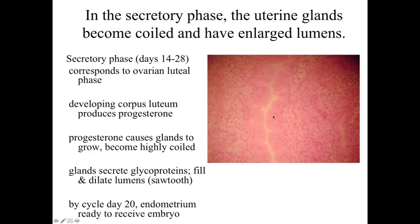After ovulation, we have the luteal phase of the ovary, and corresponding to this, there's an increase in progesterone. Progesterone stimulates the uterine endometrial lining cells to differentiate further, and the glands start to have a coiled or zigzag appearance, secreting glycoproteins. The lumens of what used to be straight, test tube-like structures become engorged, giving an almost sawtooth appearance. This is in preparation for receiving the embryo, so the characteristic of uterine glands during the secretory phase is that they're coiled, zigzag, with enlarged lumens.